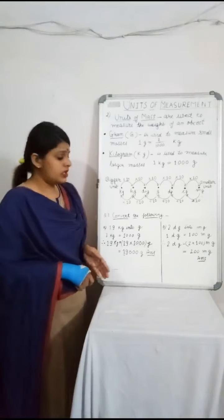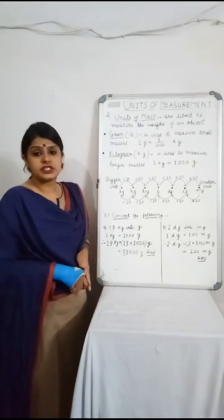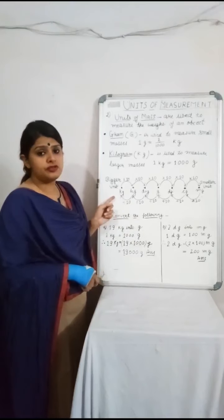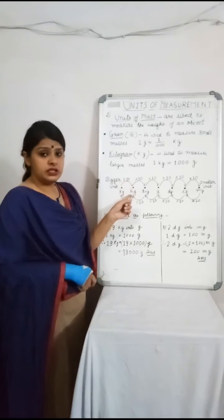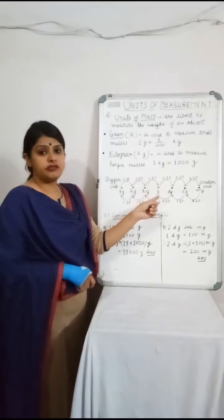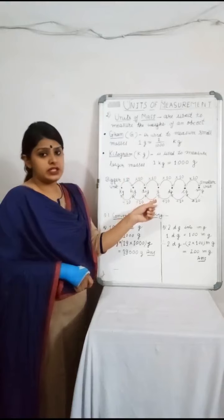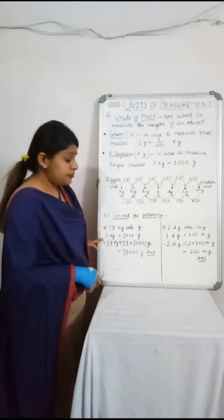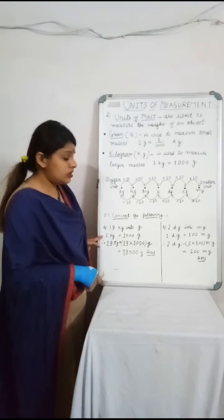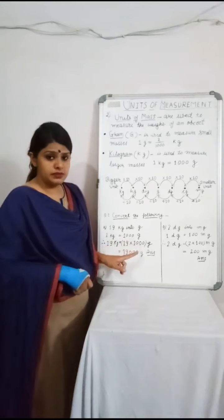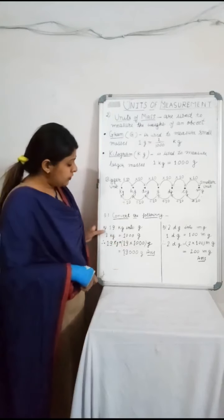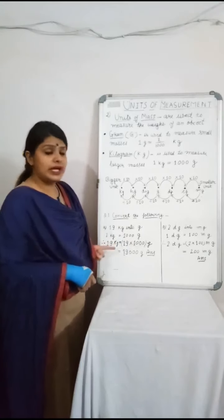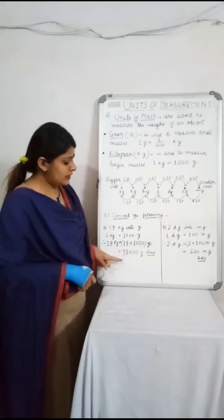A. Convert 19 kg into grams. Here we have to convert kg into grams. We will move 3 steps ahead, so we will multiply by 1000. First we take the basic: 1 kg is equal to 1000 grams. Now we find the grams in 19 kg — that is 19 kg equals 19 multiplied by 1000, which is 19,000 grams.